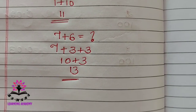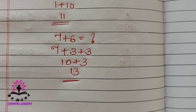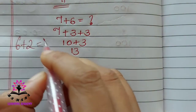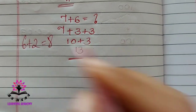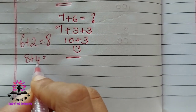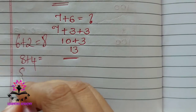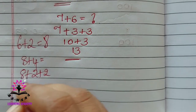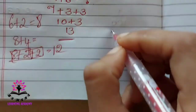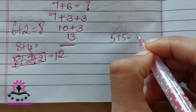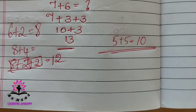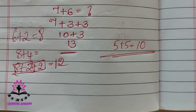Now I'll give you some more sums — add mentally and tell me the answer. How much is six plus two? Eight — good. Eight plus four: you can write four as two plus two, so eight plus two is ten, plus two is twelve. One more: five plus five — how much? Ten — good. Now let us solve the fill-in-the-blanks exercise from your textbook.